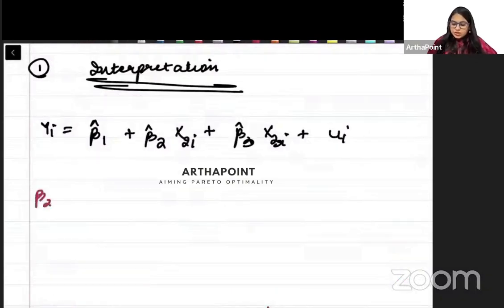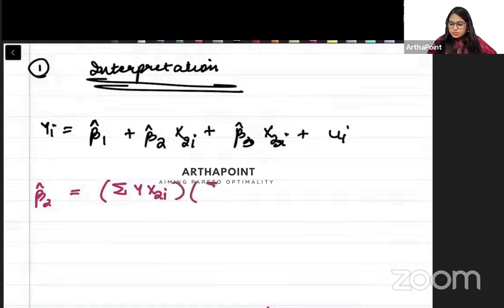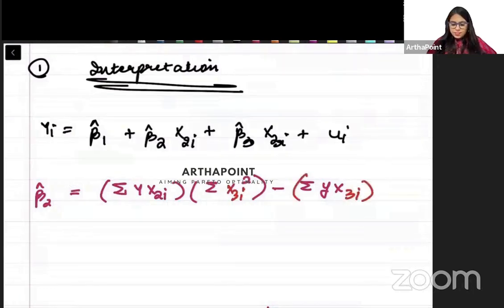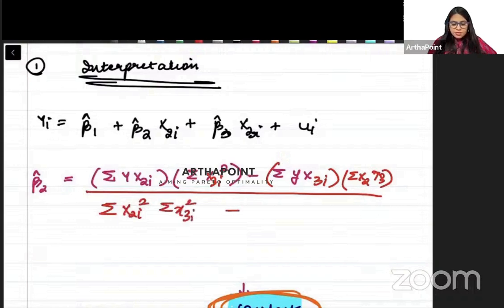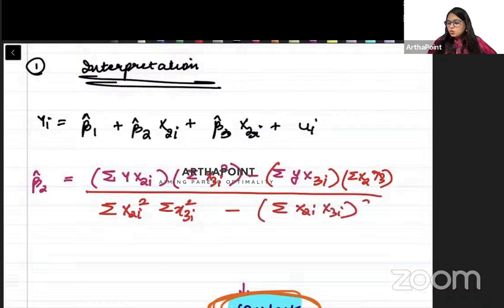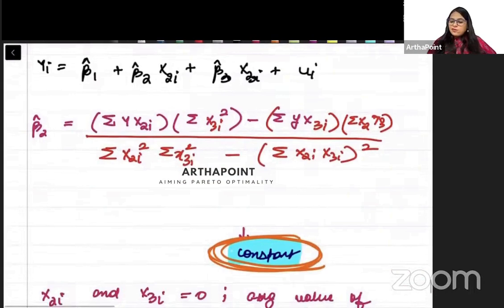Please understand that the formula of beta 2 hat will be: summation yi x2i times summation x3i squared minus summation yi x3i times summation x2i x3i, divided by summation x2i squared times summation x3i squared minus (summation x2i x3i) squared. This is the formula of beta 2.